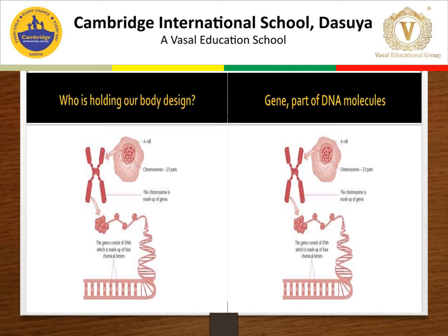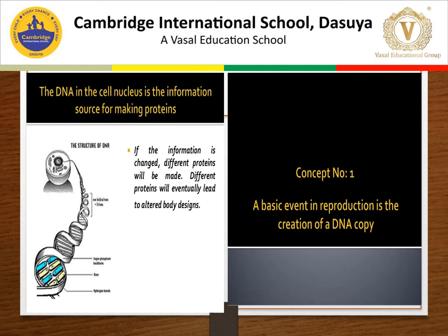Information is encoded in the sequence of nucleotides in DNA. DNA molecules contain all information to make specific proteins, which in turn function as enzymes to control chemical reactions in the body. These chemical reactions govern the metabolism of the body and produce specific traits. Thus, for transmitting the characters to the next generation, DNA forms its copy to transfer to newly formed cells. So DNA in the cell is the source for making proteins. If information is changed, different proteins will be formed, and different proteins will lead to a different body design. So the basic event in reproduction is the creation of DNA.